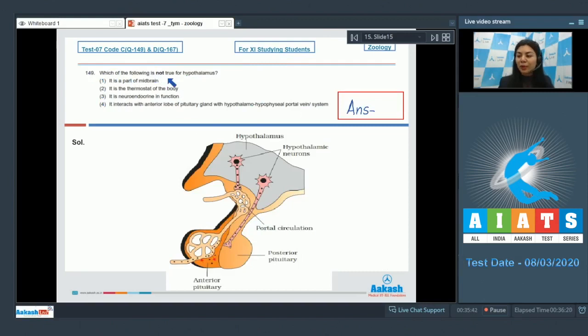Question 149: Which of the following is not true for hypothalamus? It is a part of midbrain. It is thermostat of the body. It is neuroendocrine in function. It interacts with anterior lobe of pituitary gland with hypothalamus or hypophysial portal venous system. We are looking for an incorrect statement. Option 1, it is a part of midbrain, is incorrect. Hypothalamus is a part of forebrain.